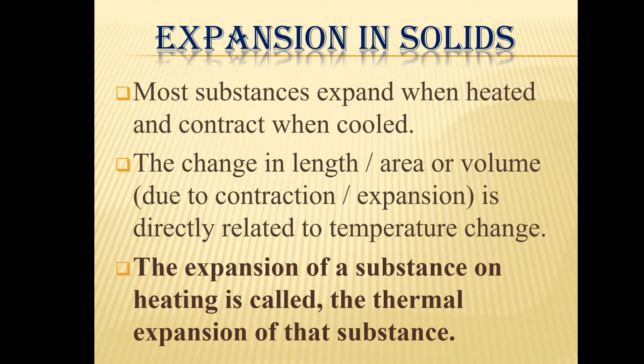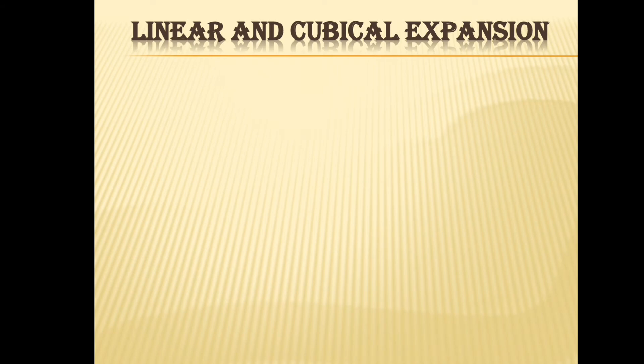When a solid substance is heated it will expand, and when cooled it will contract or shrink. The change in length, area, or volume due to contraction or expansion is directly related to temperature change. The expansion of a substance on heating is called its thermal expansion. Thermal expansion can be classified into two types: linear expansion and cubical expansion.